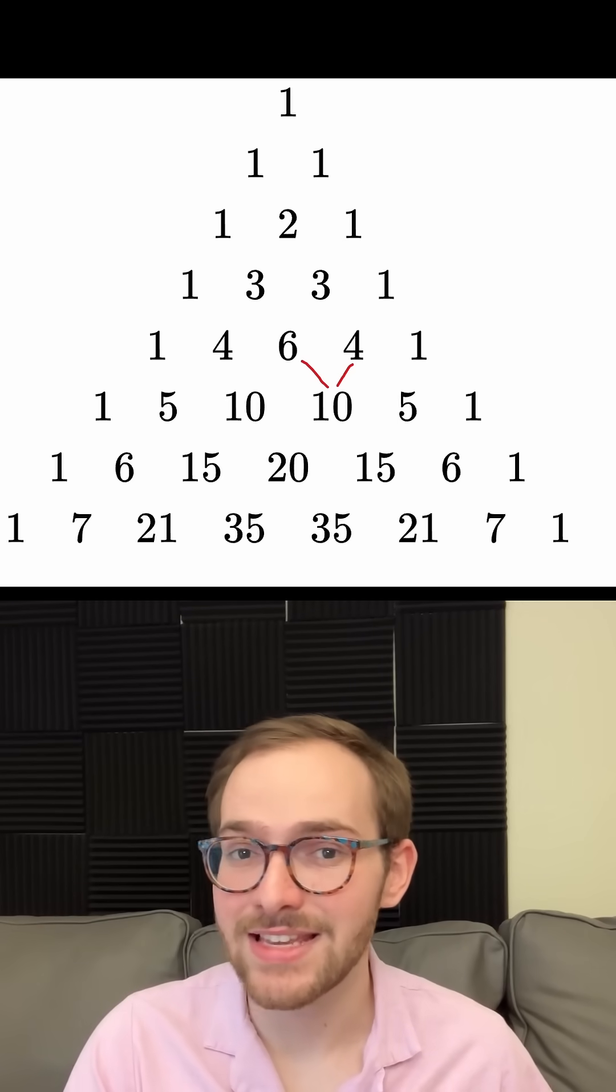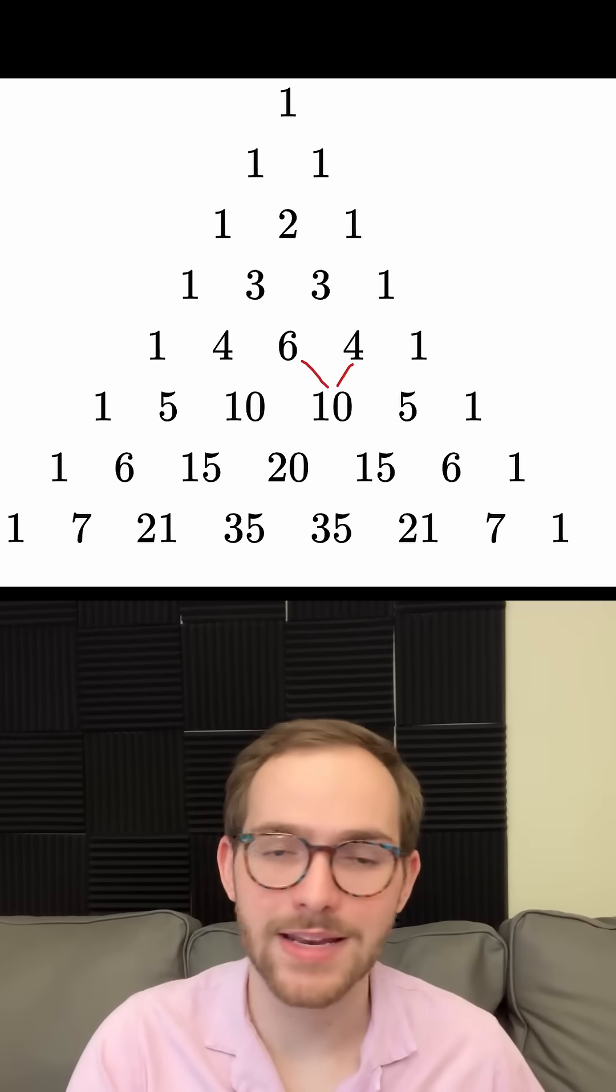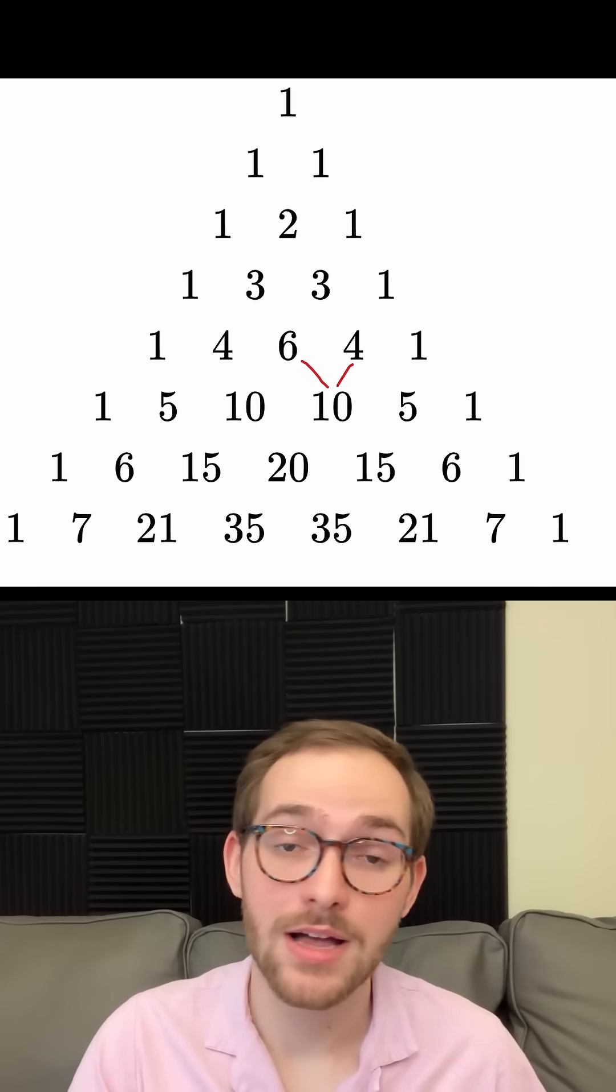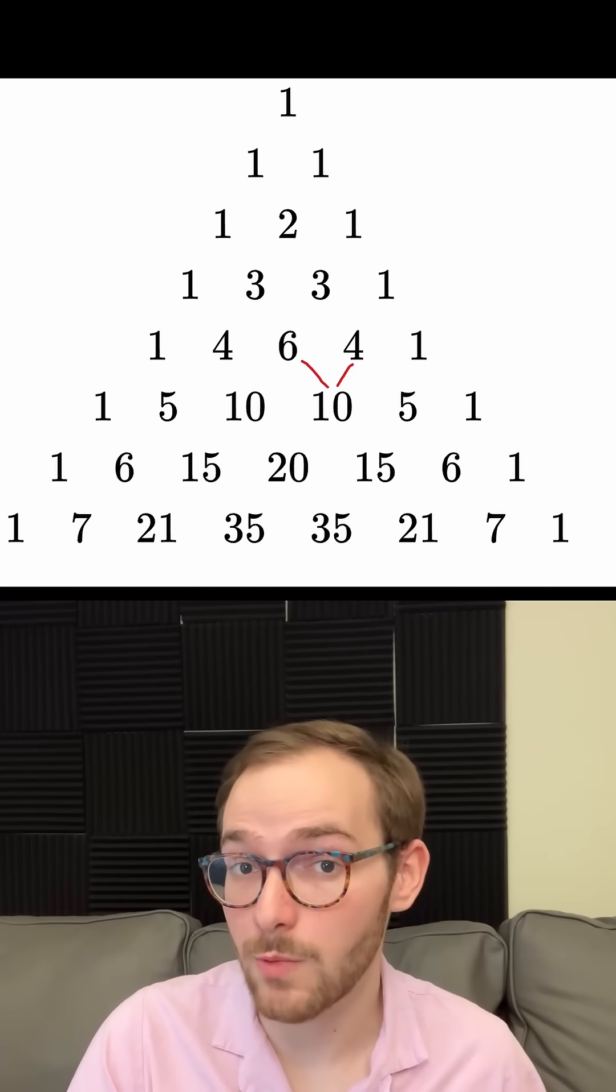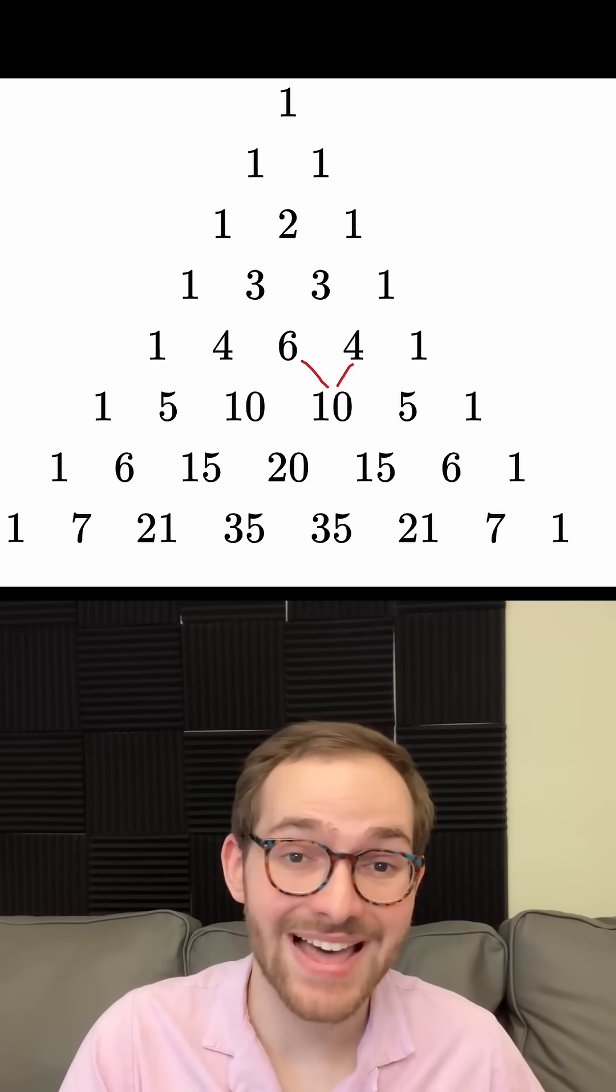It's fairly easy to see that no number other than 1 can appear infinitely many times in Pascal's Triangle, because in row n, other than 1, every number is at least n.